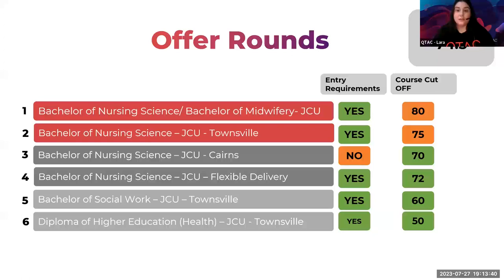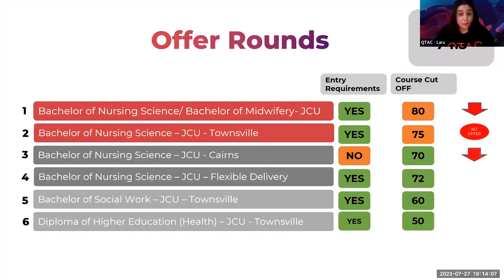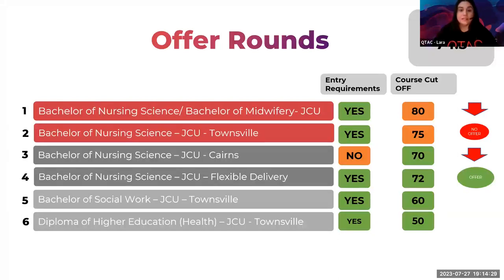Here is an example of how the offer rounds can work. We can see Harry's minimum ATAR and the course cut-off ATARs — these are just examples, no indication of what will actually happen. For preferences one and two, Harry's ATAR is not high enough so he can't be considered. For his third preference, although he's met the minimum ATAR, he hasn't met the eligibility requirements — perhaps a subject prerequisite — so an offer cannot be released. Harry would be released an offer for his fourth preference. When you see all preferences say 'satisfied,' it means you've met the minimum entry requirements to be considered — it is not a guarantee of an offer.